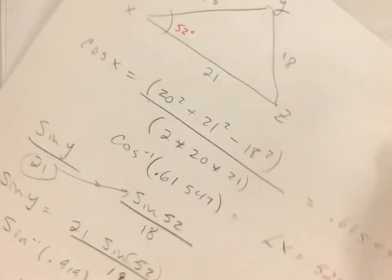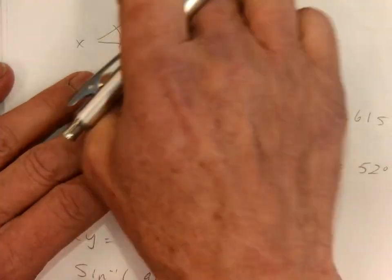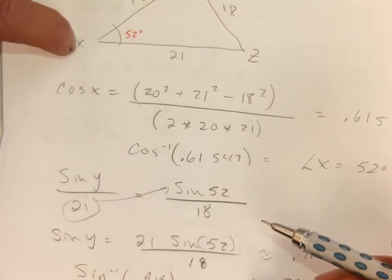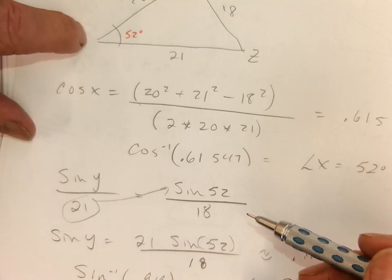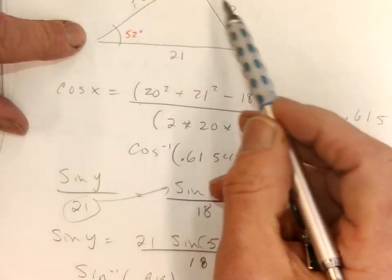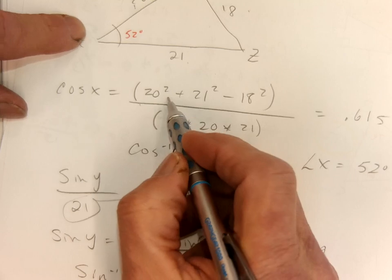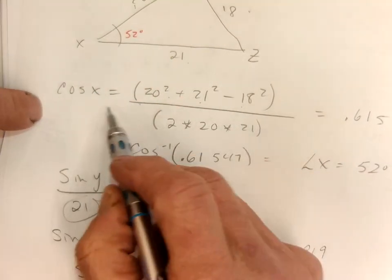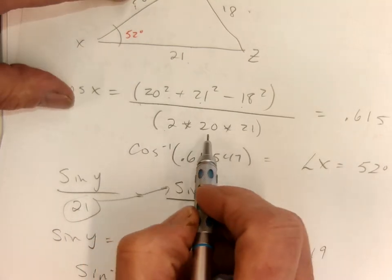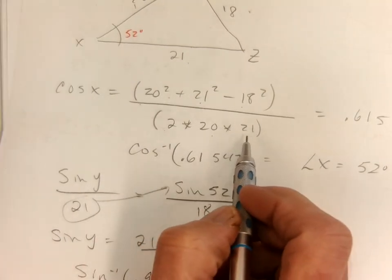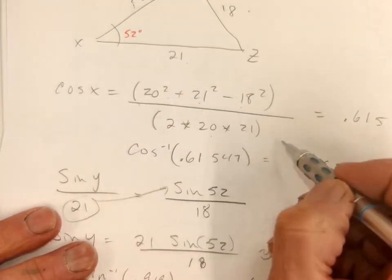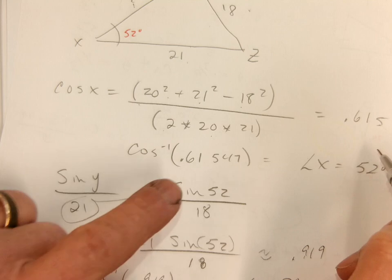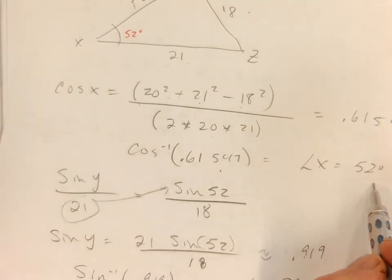On the next triangle I know side, side, side, so I'm going to use the law of cosines. I picked angle X to find. That makes the sides adjacent, adjacent, opposite. The law of cosines says it is adjacent squared plus the other adjacent squared minus the opposite squared, all divided by 2 times adjacent times adjacent. Don't forget your parentheses in the calculator. I got a decimal of 0.6154, took cosine inverse of that, and got about 52 degrees.